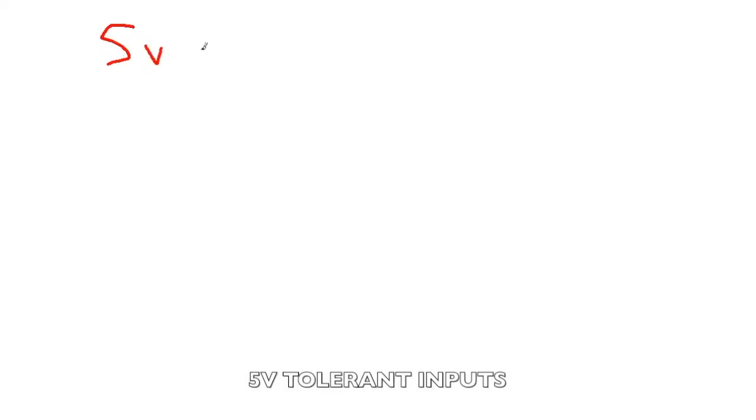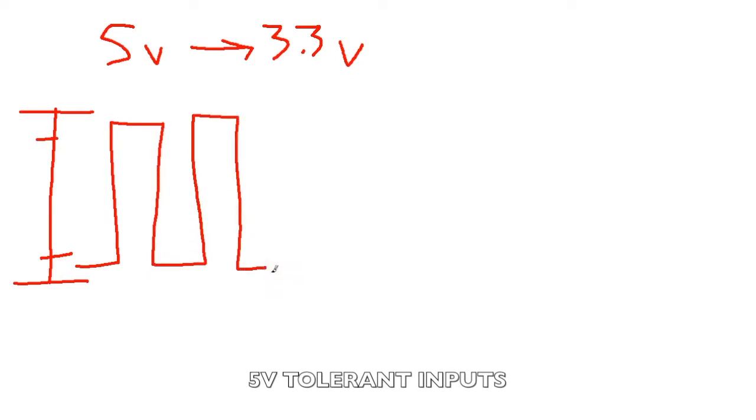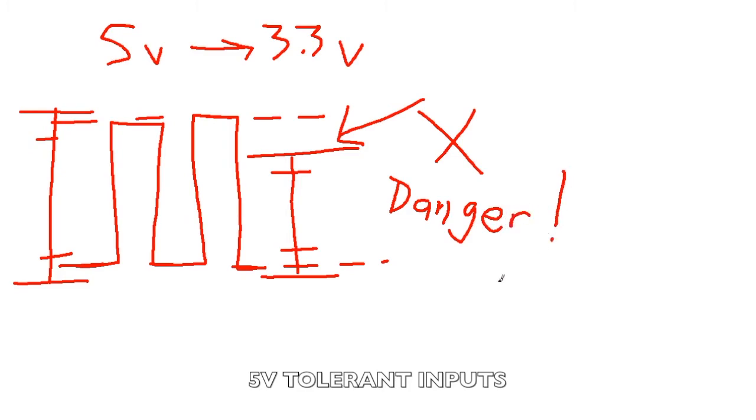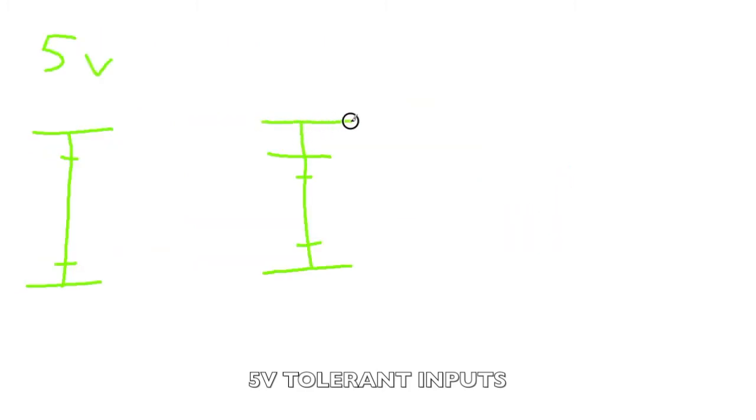We also have what are called 5 volt tolerant inputs. Now when you're running 5 volts into 3.3 volts, we know we can't do that because the output signal is going to exceed the maximum input signal of 3.6 volts and then blow your input out. But occasionally on these 3.3 volt pins, they're what's called 5 volt tolerant. So it'll take that signal right here, which is usually the danger zone, and then it adds a little headroom up top. So when you have that signal coming in that would usually pop us over 3.6 volts, it's just fine.